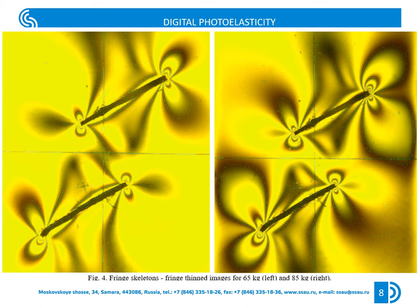The programming tool allows us to save the photomechanics parameters, such as coordinates of these points and the order of the isochromatic fringes, in a text file.